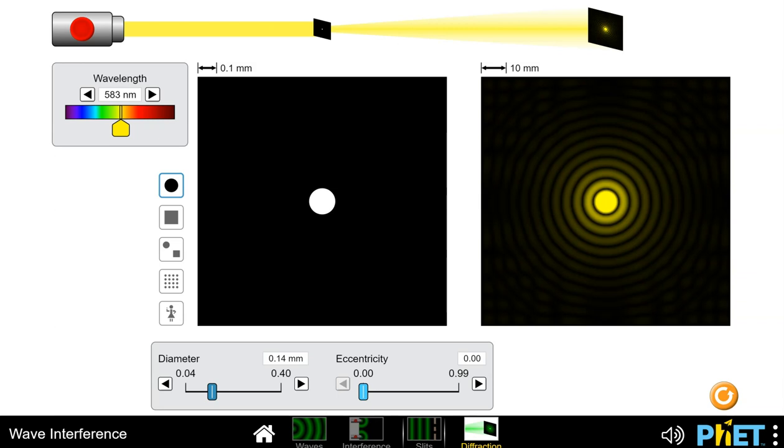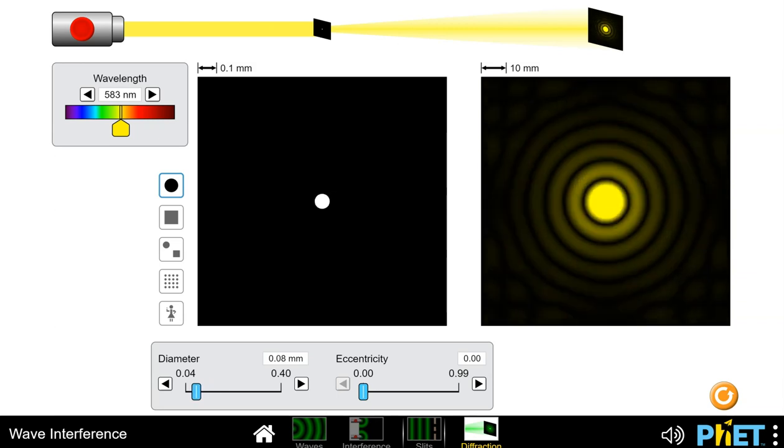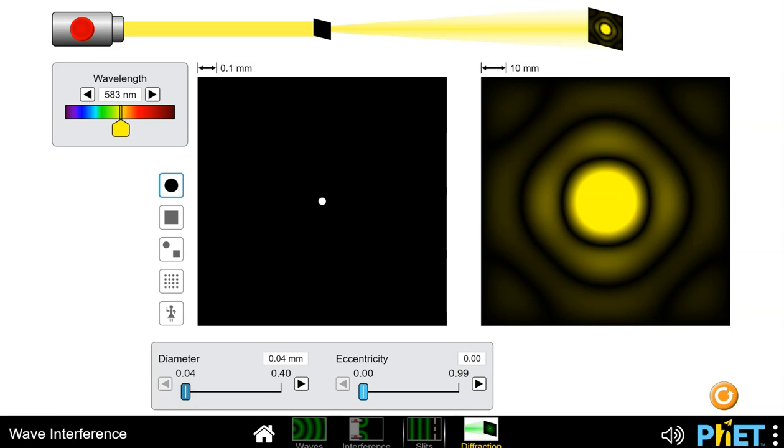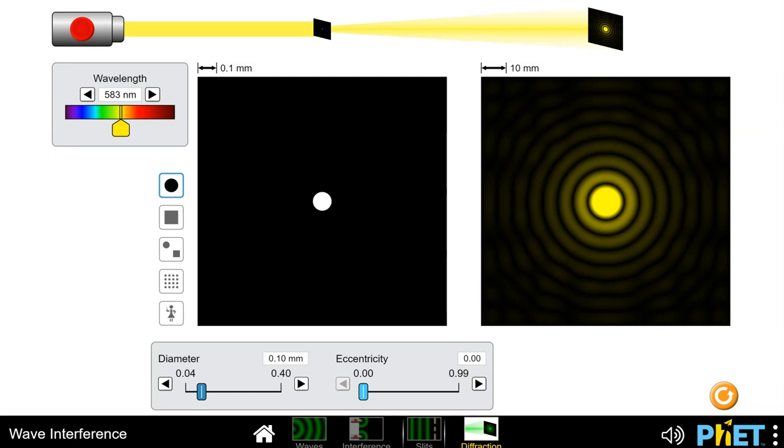Similar to the single-slit interference, if we change this diameter of the opening, the pattern on the screen changes. The smaller the diameter of the actual opening, the aperture, the larger the diffraction becomes. If we make it a little bigger, that diffraction pattern, the radius of that central max gets smaller.